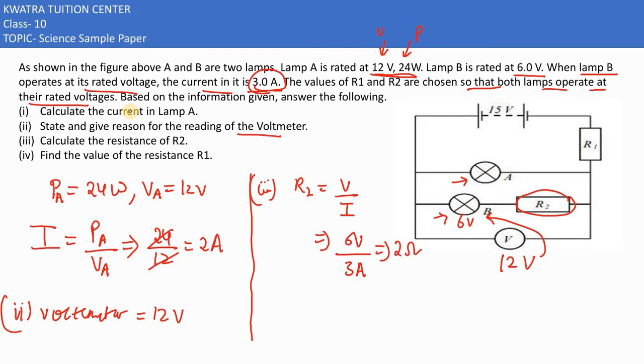Now we have the fourth part. They are saying find the value of the resistance R1. R1 value. So what is the total current flowing through R1? I would be in this case 3 ampere plus 2 ampere, because through A, 2 ampere is flowing. 3 plus 2, it will become 5 ampere. So if we have 5 ampere, potential difference would be how much? From 15, 12 went because 12 volt was utilized here. Total 15, how much volt remained? 3 volt.